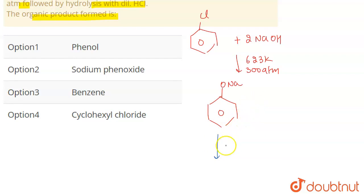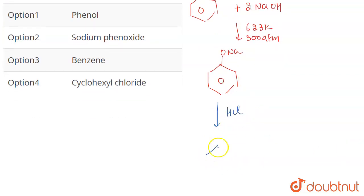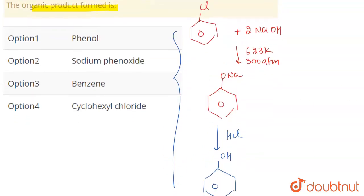And when the sodium phenoxide is hydrolyzed with the help of hydrochloric acid, it leads to the formation of phenol. This is one of the preparations of phenol - one of the reactions that is used for the preparation of phenol.